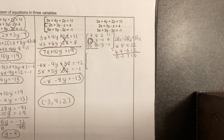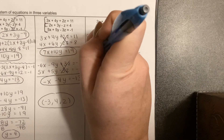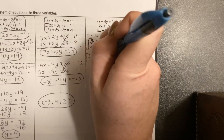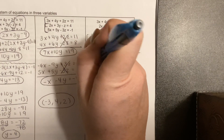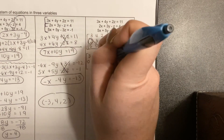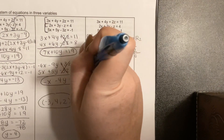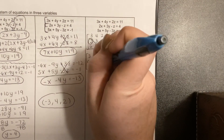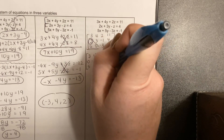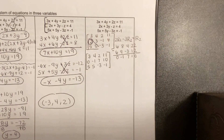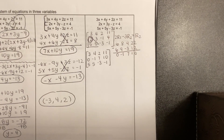So we come right here and type that in. The top row stays the same: 3, 4, 2, 11. R2 becomes 0, negative 1, 7, and 10. The bottom row stayed the same also. All right, so we got our first zero — that's awesome. Now we're going to work to the one below, and try to zero out this 5 right here.